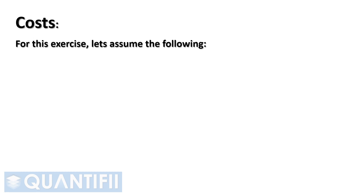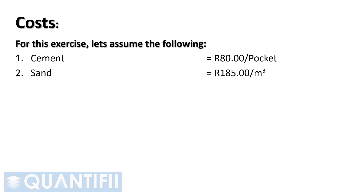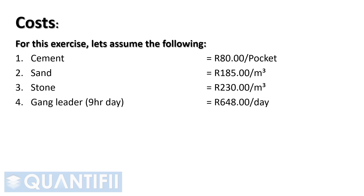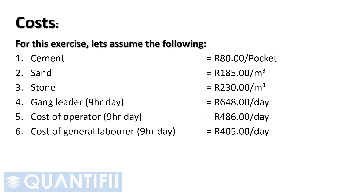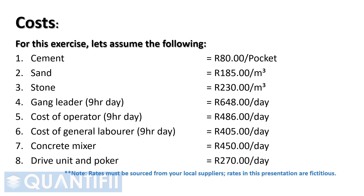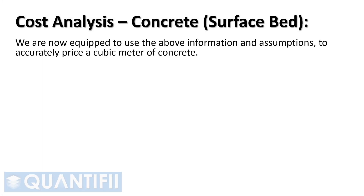To tender accurately, contact your local suppliers for current rates and substitute your local currency into the analysis. For this exercise, let's use the South African Rand and assume the following: cost of cement at 80 Rand per pocket; sand at 185 Rand per cubic meter; stone at 230 Rand per cubic meter. Laborers are paid for a 9-hour day which includes an hour's lunch. A gang leader at 648 Rand per day, cost of operator at 486 Rand per day, cost of general laborer at 405 Rand per day, concrete mixer at 450 Rand per day, drive unit and poker at 270 Rand per day.